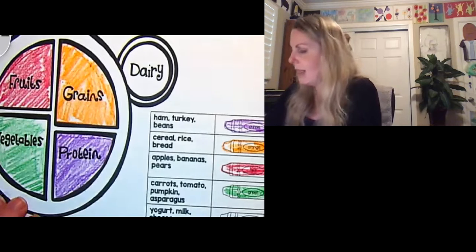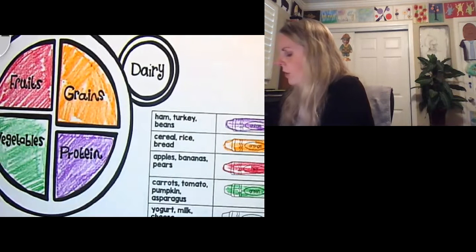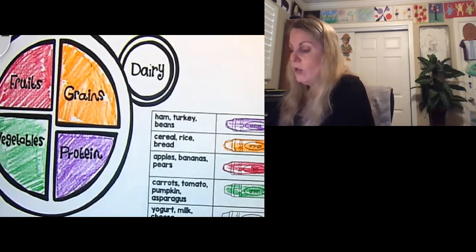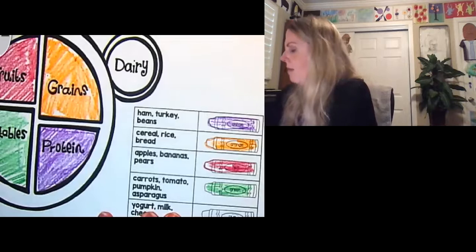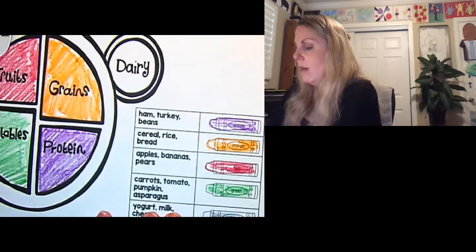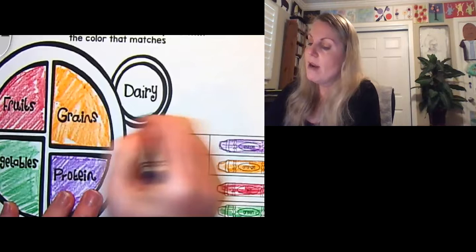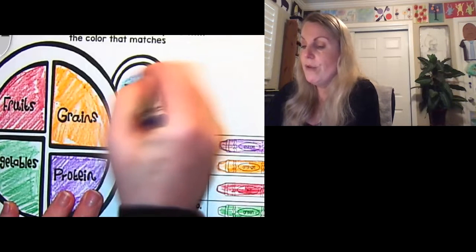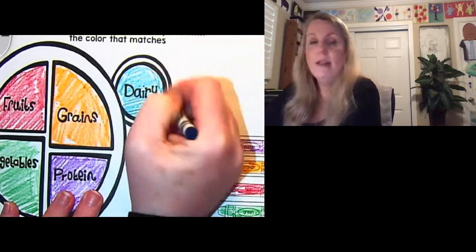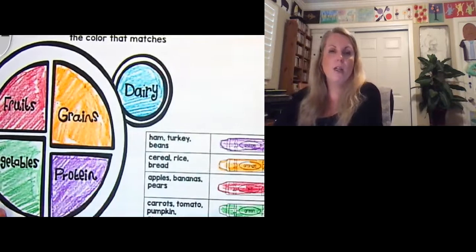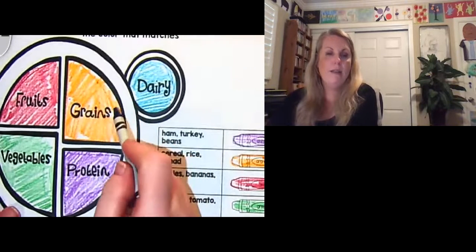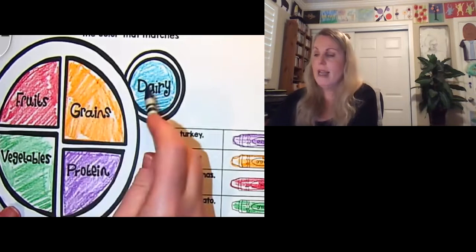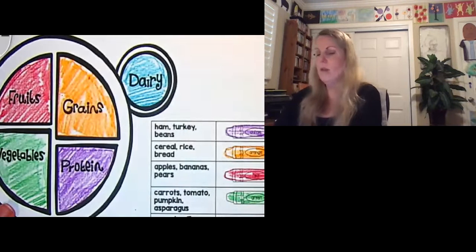And that last thing that we have that we're gonna go ahead and color blue is our dairy. So yogurt and cheese and milk. That is our dairy. And we're gonna go ahead and we're gonna color that blue. So these are our different food groups. We're gonna be talking more about this. So this is a nice introduction of our food groups. We have grains, protein, vegetables, fruit, and dairy. This is our color code in order to do this correct.